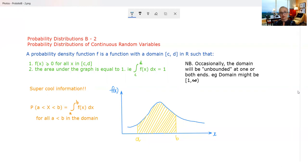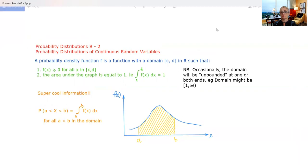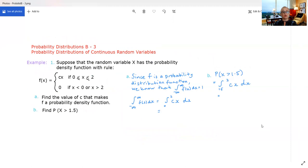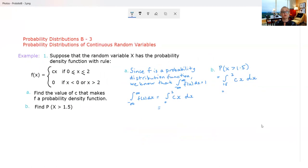Let's move on and have a look at an example. So here's an example where we're told that we have a random variable x and we're given the probability density function that f of x is c times x for x between 0 and 2 inclusive and the probability density function is 0 if x is less than 0 or x is greater than 2. First of all what is that going to look like? Okay this is a piecewise function.